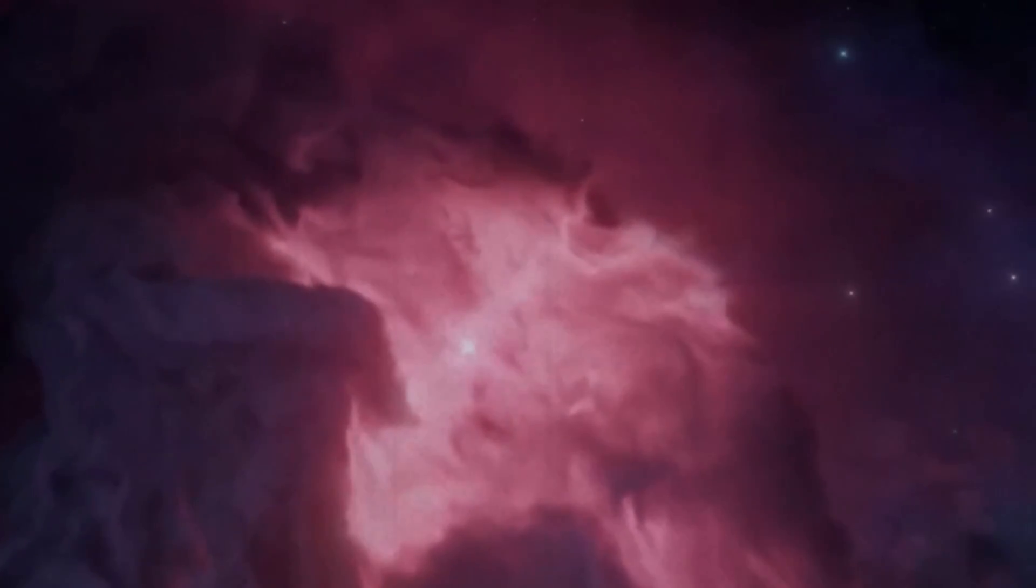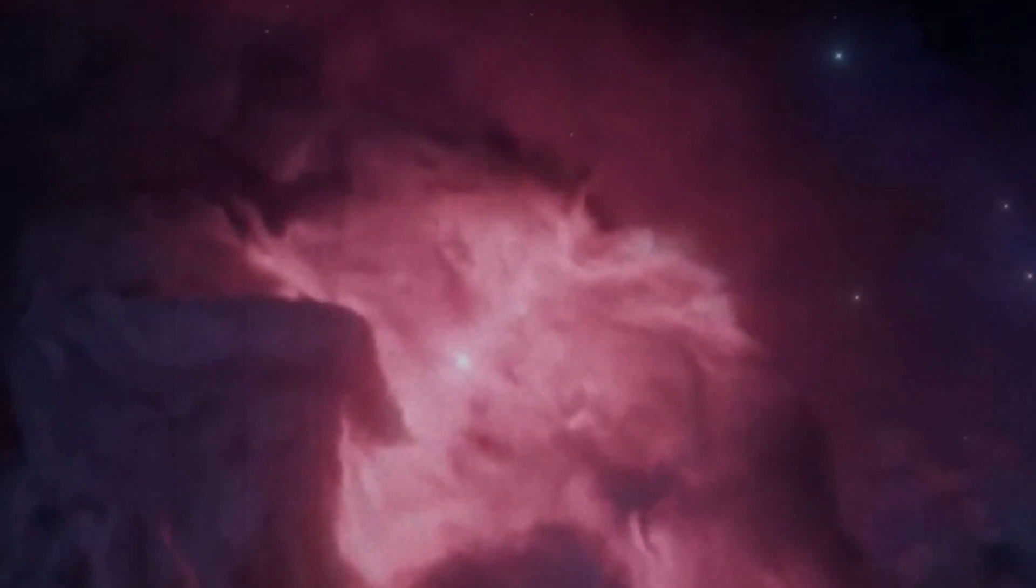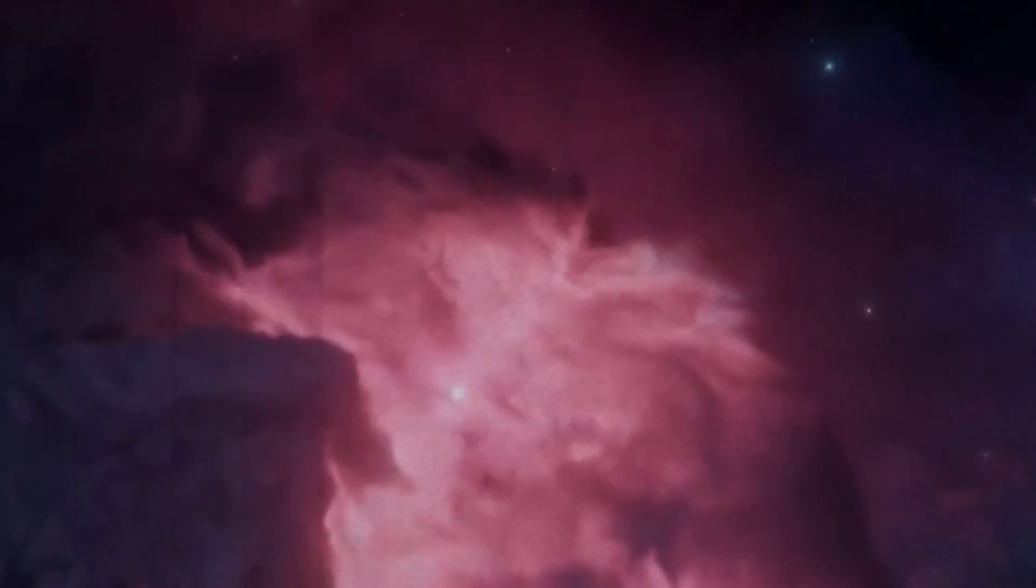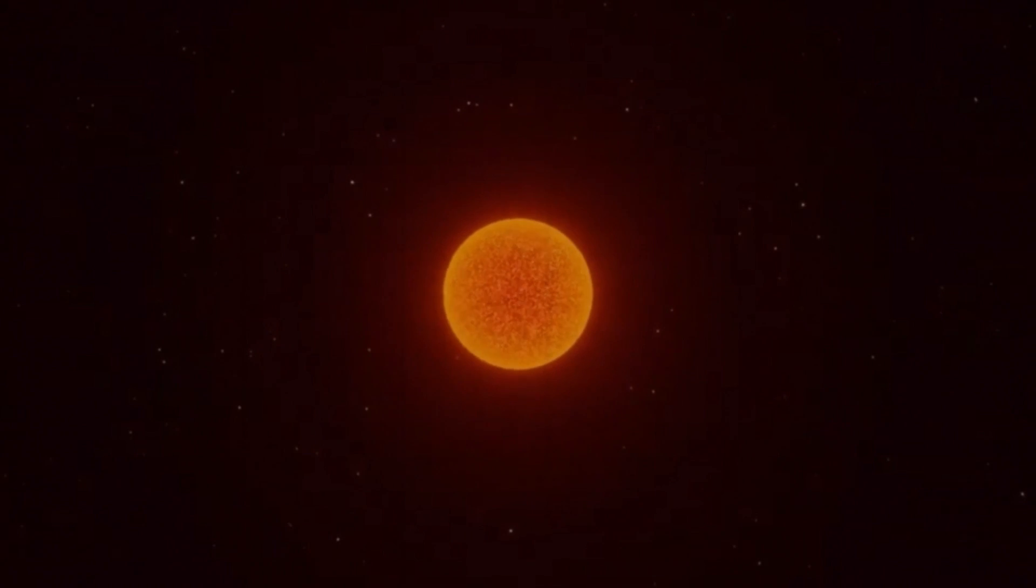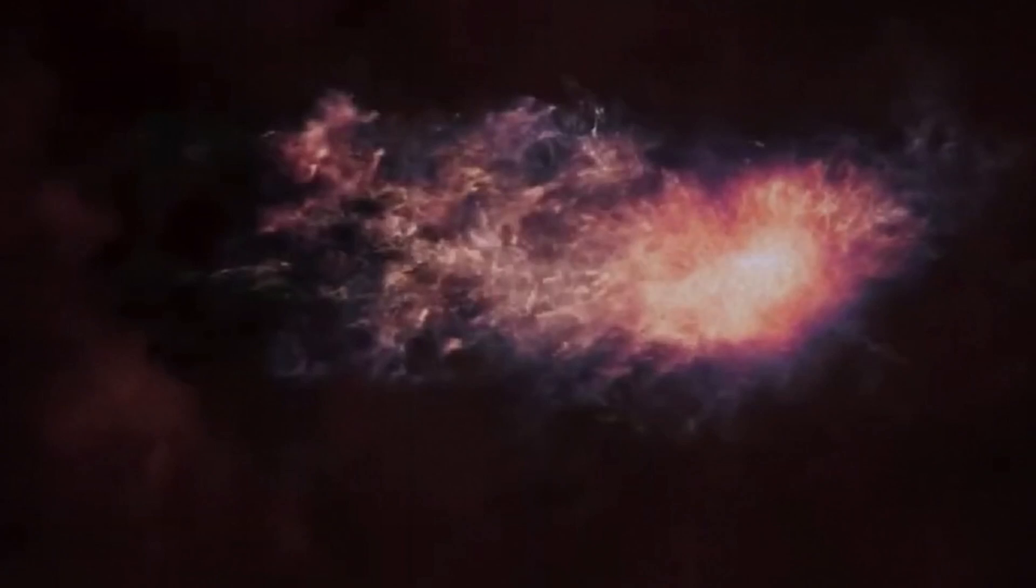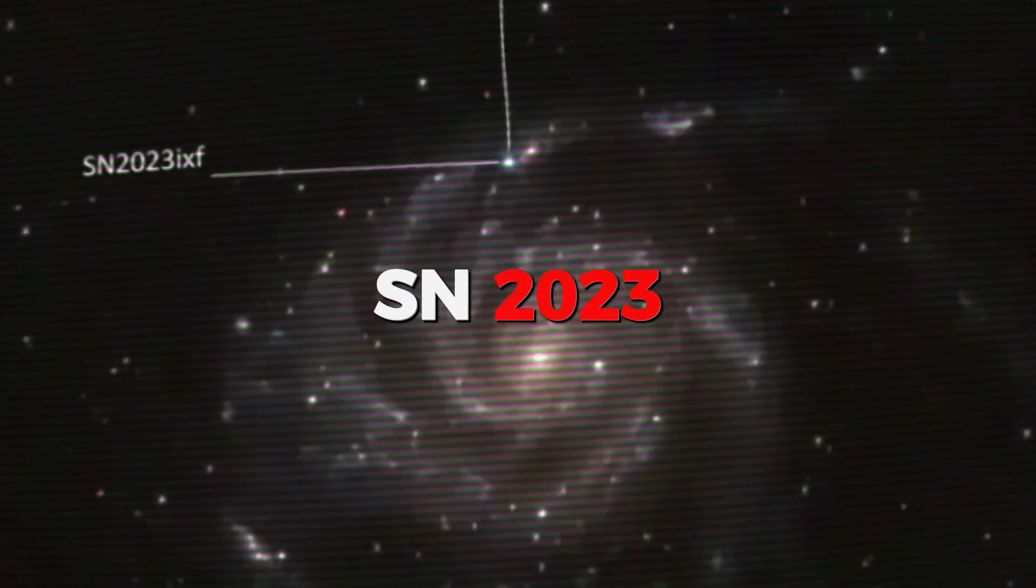The critical moment arrives when iron begins to form at the core. Unlike lighter elements, iron fusion doesn't release enough energy to counter the star's gravitational pull. The star swells and undergoes an implosion, followed by a powerful rebound, resulting in a supernova explosion. Now, the question is, is Betelgeuse on the verge of a dramatic end, or is it just taking its time?